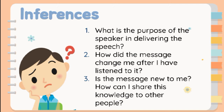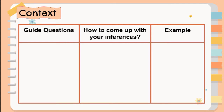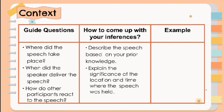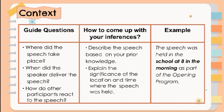To understand the CASTS method, here is a table that presents the guide questions and steps in making inferences. For Context, the guide questions are: Where did the speech take place? When did the speaker deliver the speech? How do other participants react to the speech? To come up with your inferences, describe the speech based on your prior knowledge and explain the significance of the location and time where the speech was held. Example: The speech was held in the school at 8 in the morning as part of the opening program.